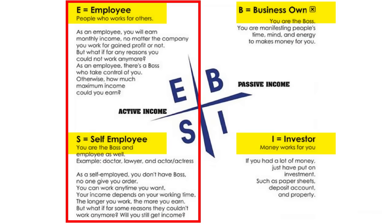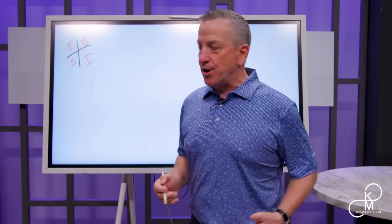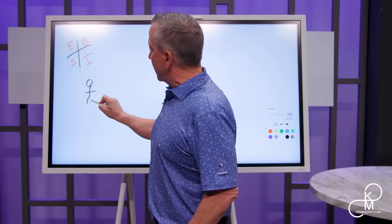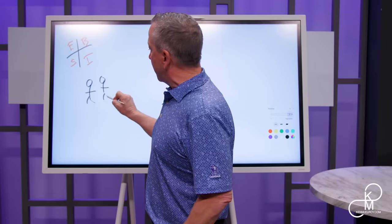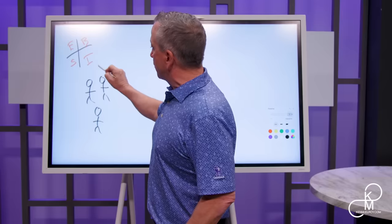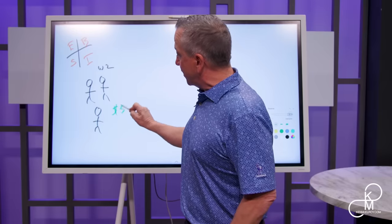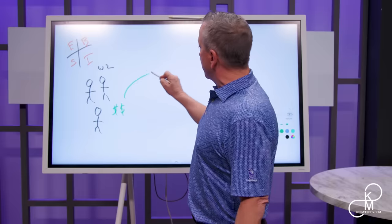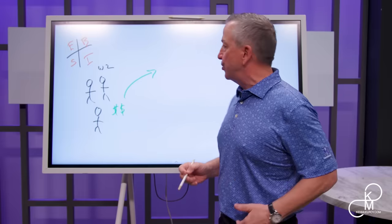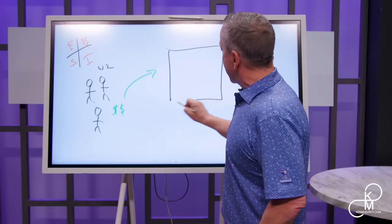So this is how the system works, and this is exactly what I wish I would have known. As an employee, many of us are working our butts off and we're what we would call W-2s. We make money each and every couple of weeks. And then what do we do? We stick it into some kind of financial institution, like a bank.